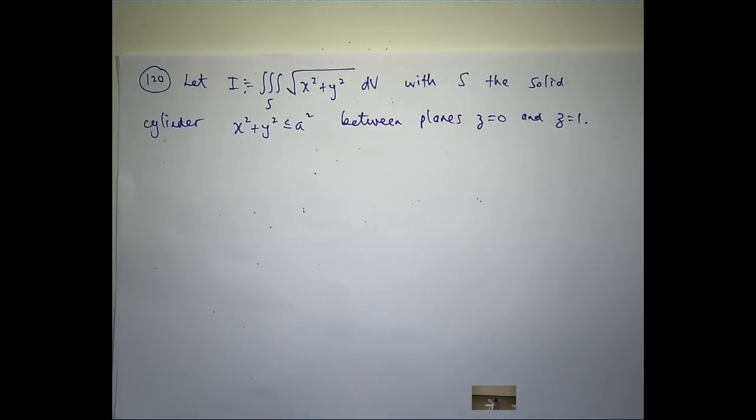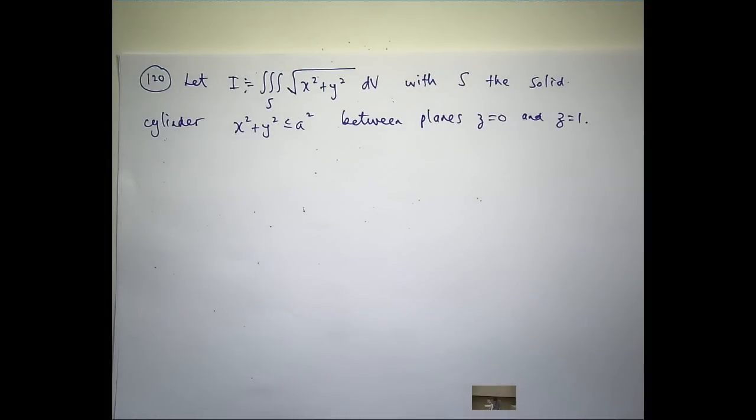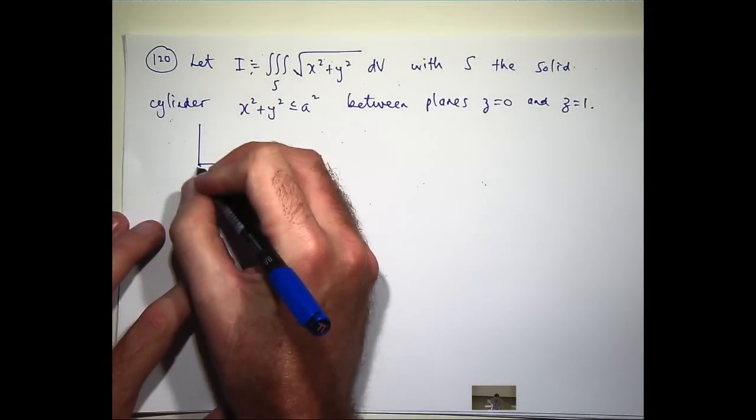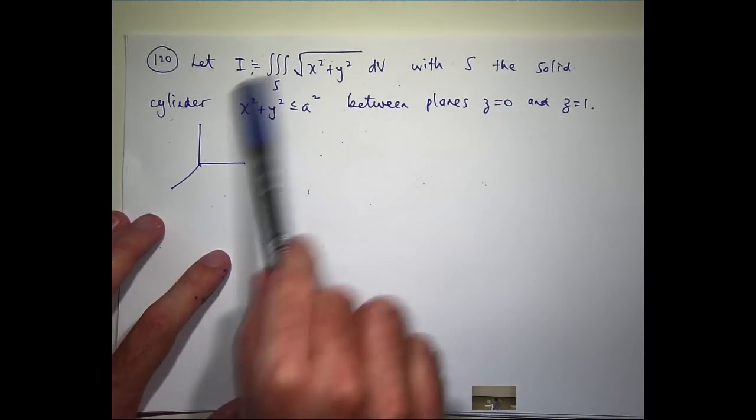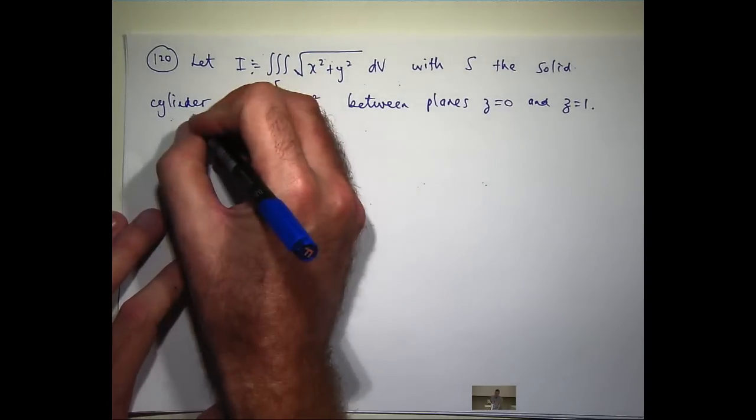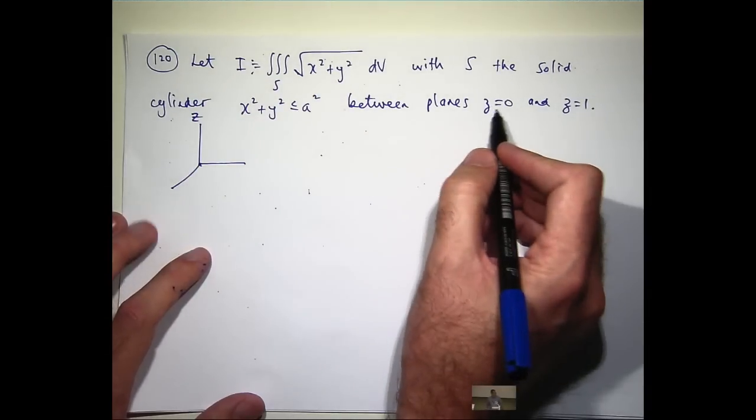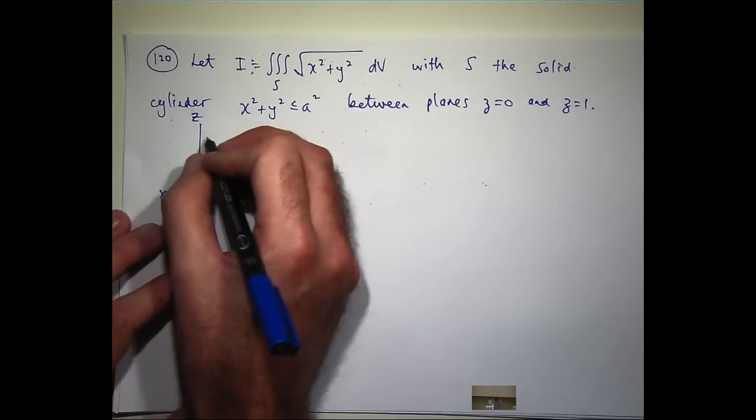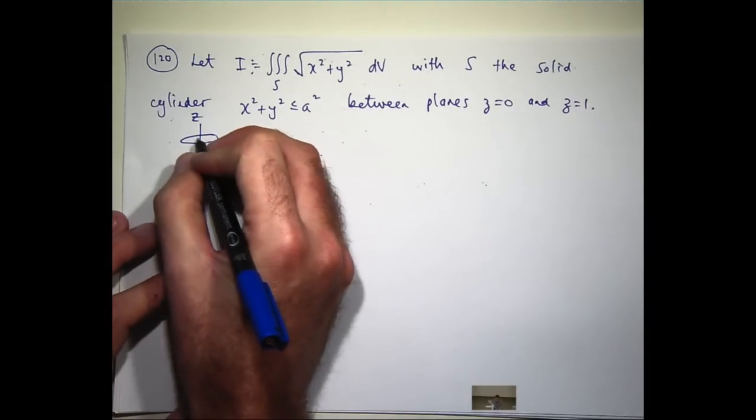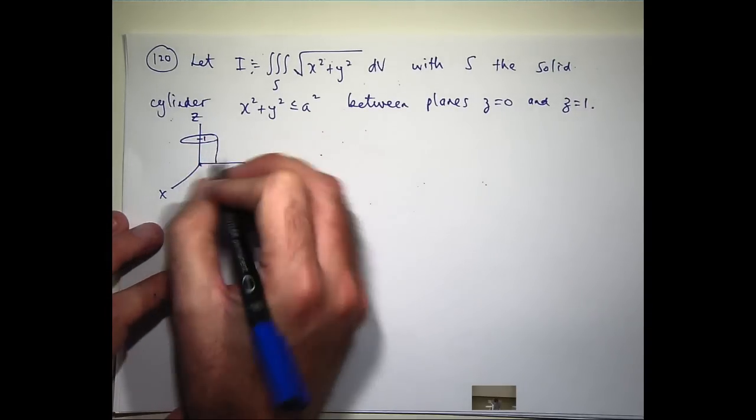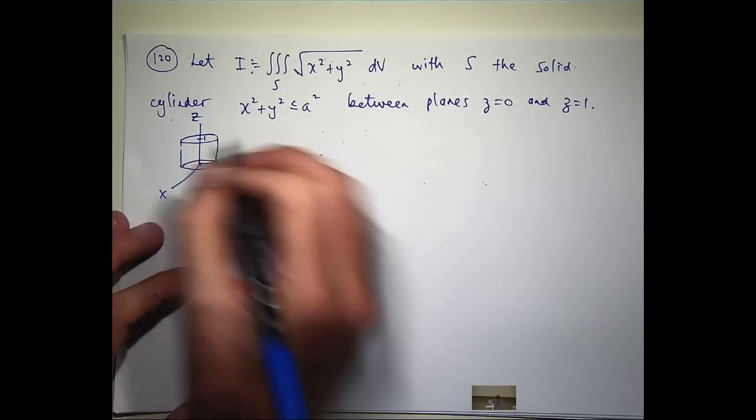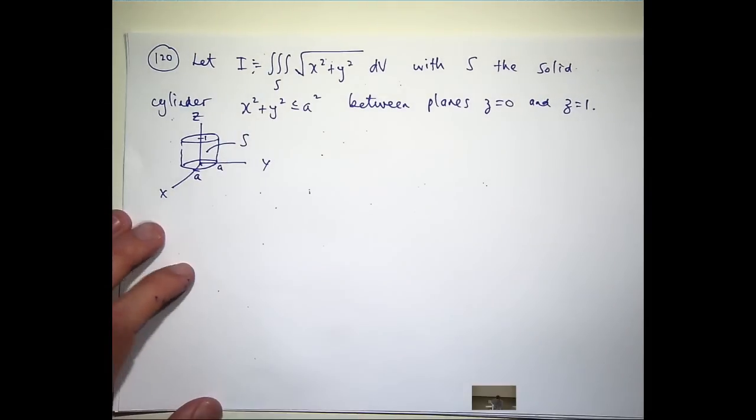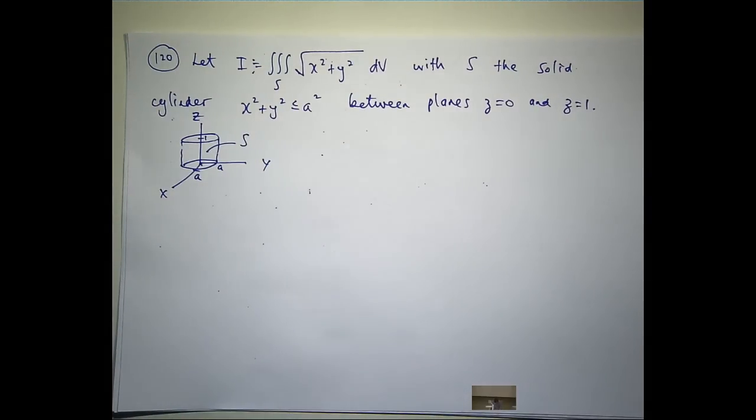But we don't have the limits of integration, that's what we need to find. Let's draw a picture and see what's what. This is going to be some sort of cylinder wrapped around the z axis. We know it's bounded below by the xy plane and above by the constant plane z equals 1. If that's 1, it's going to be something like this.